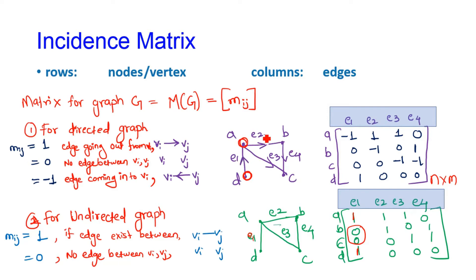So here the edges are e1, e2, e3, e4. These will be written in the column section. So this is my n by m matrix, and now we will see how we will write the entry inside the matrix.